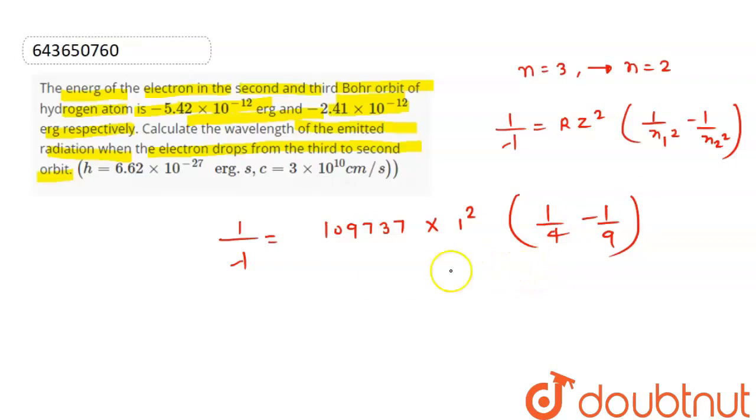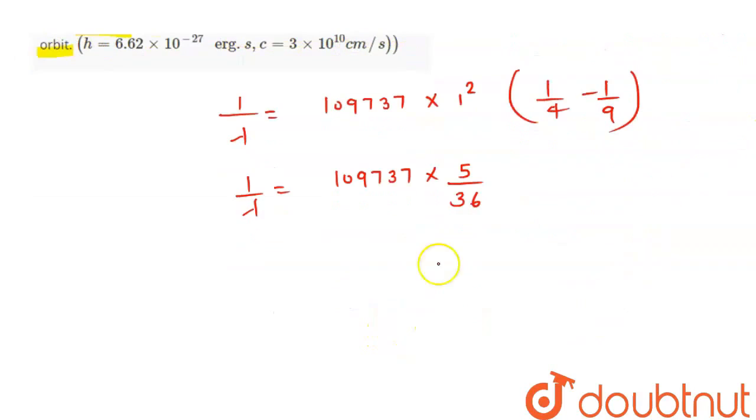LSM ले जाएंगे तो क्या आजाएगा? 1 upon lambda is equal to 109737. यह क्या आजाएगा? Now this becomes 5 upon 36. Now from here we need to calculate lambda's value.